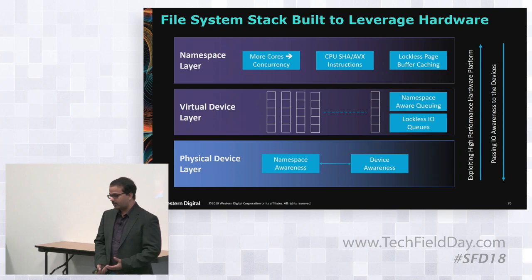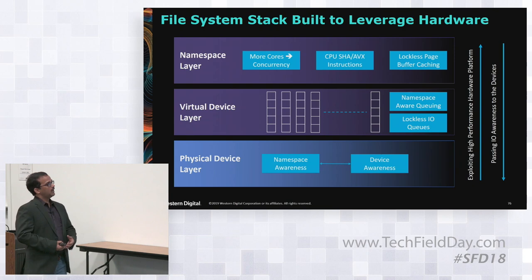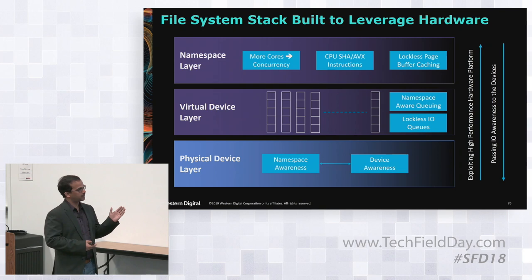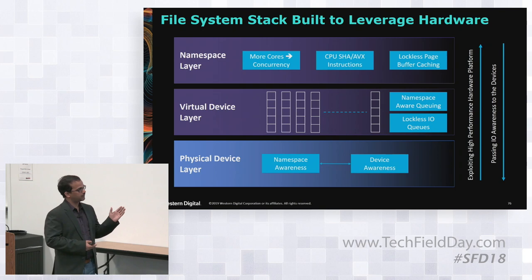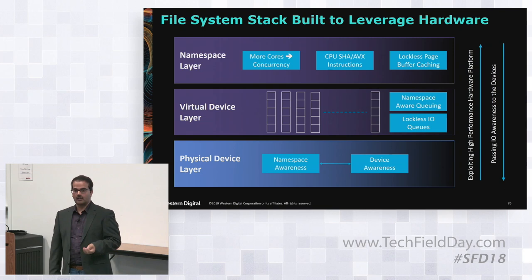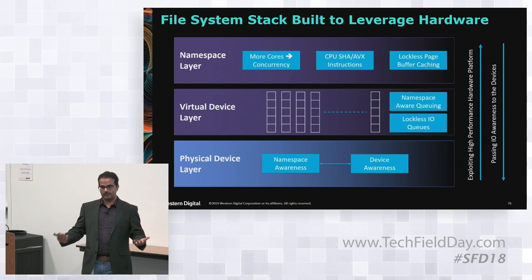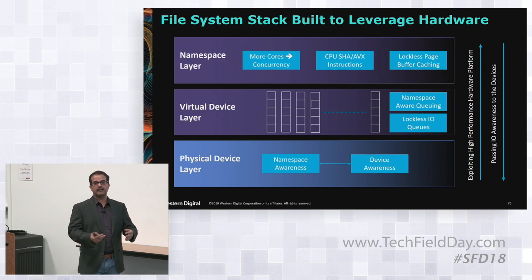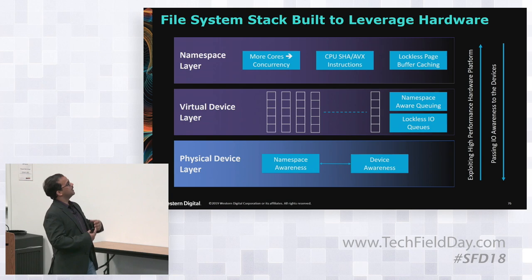Coming to the actual file system work and what we had to do to leverage that performance: the file system is logically in three layers. One is physical device consumption. I'm going to talk mainly on the namespace layer, because that's where all the file system work is done — deduplication, compression, applying the data, indexing, and all that. The key point is how do we leverage the performance range of NVMe devices? They have so much capability, and there's no hardware that can even match those capabilities, so how do we try to exploit some of that performance from the underlying devices?